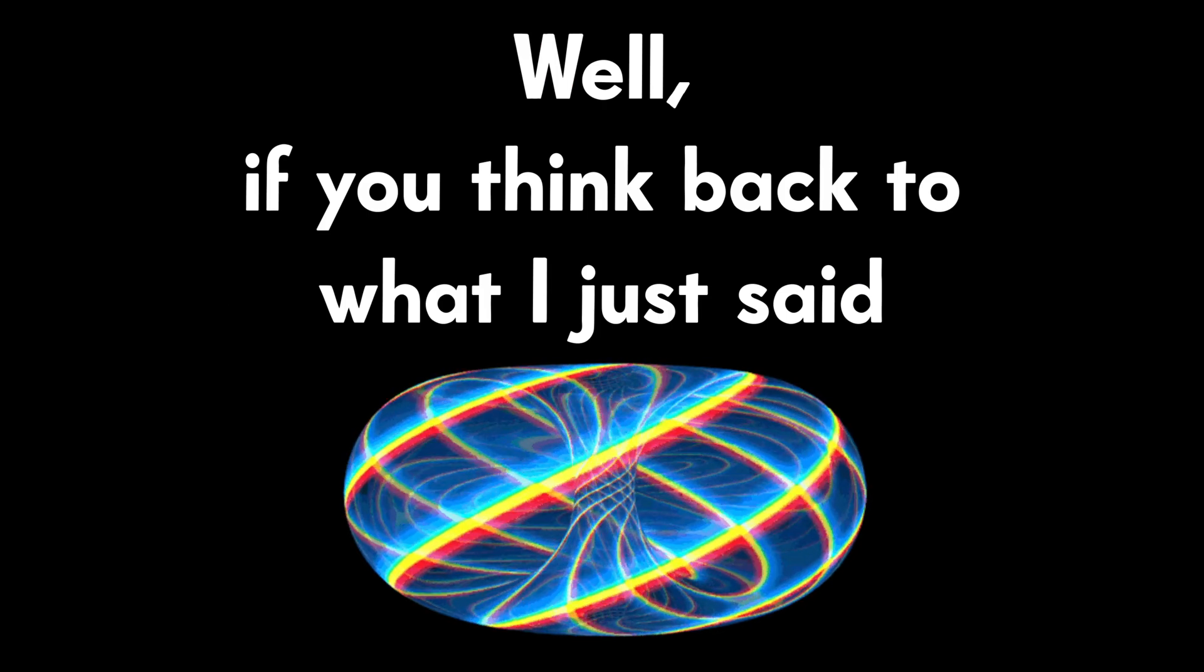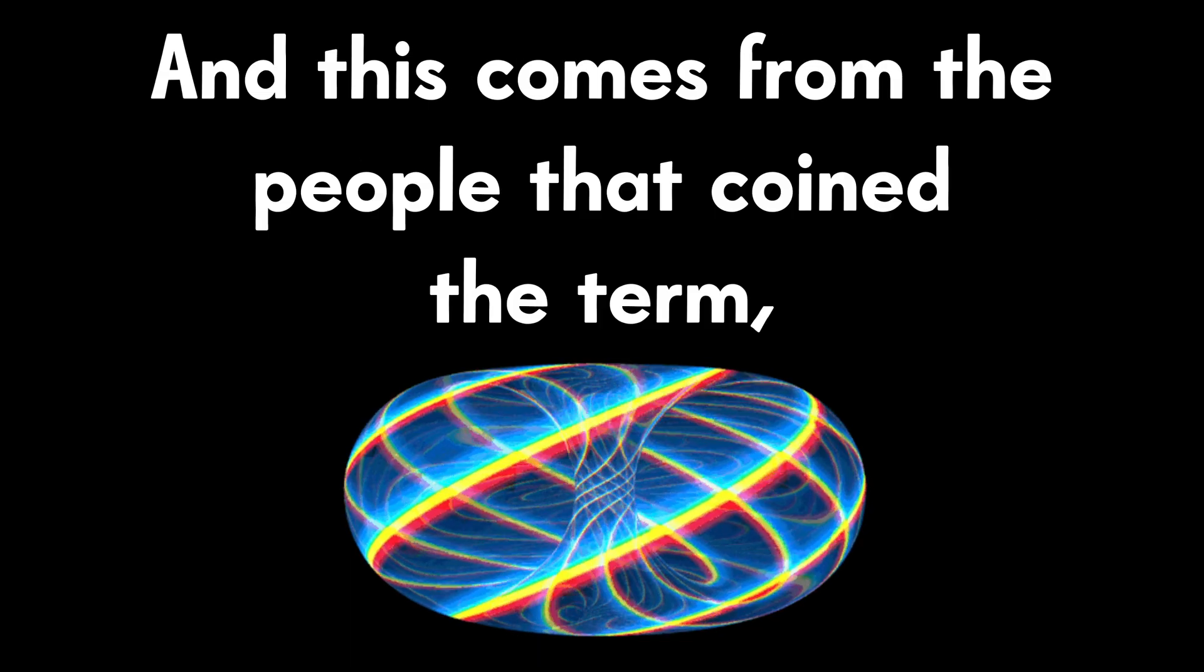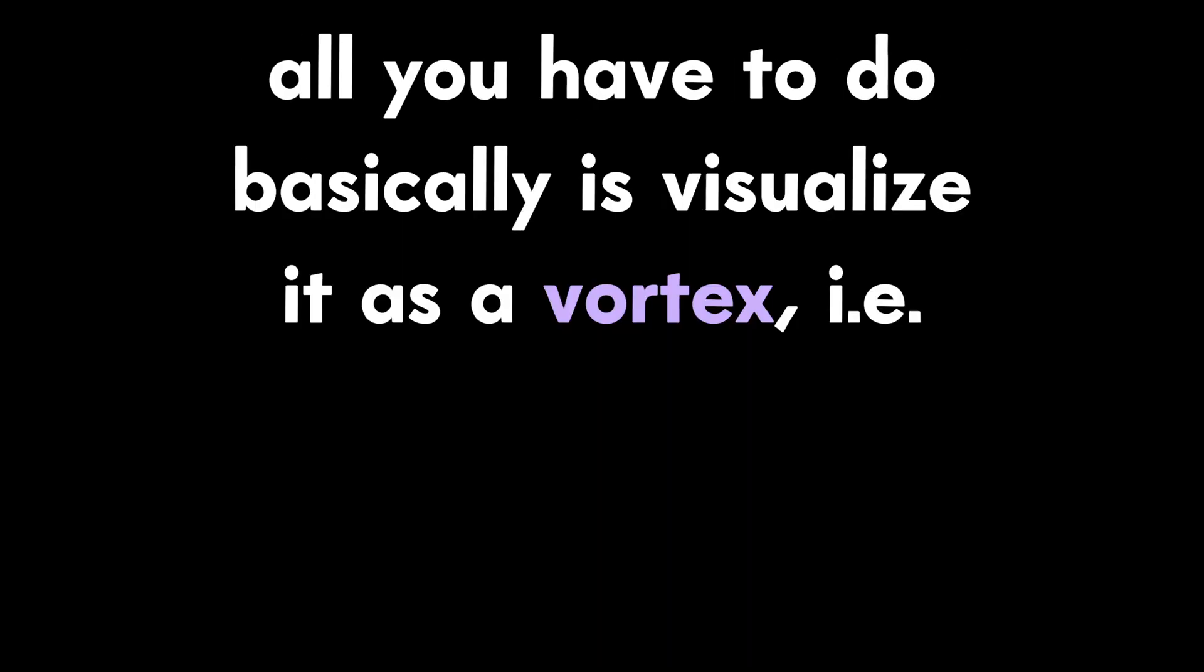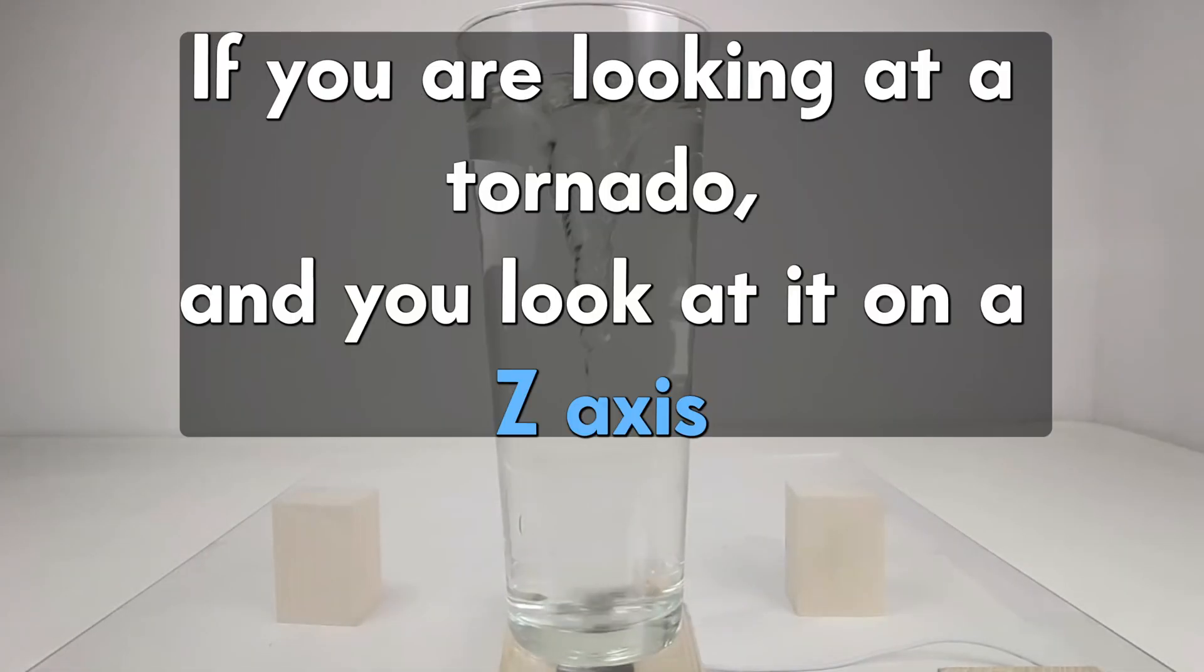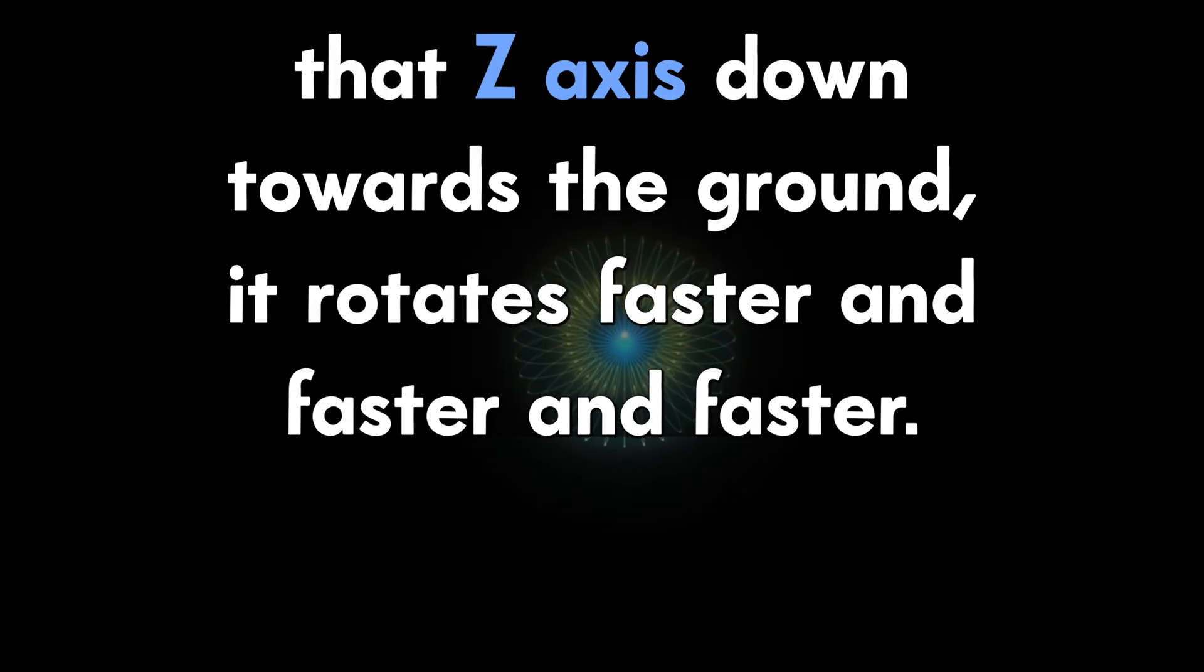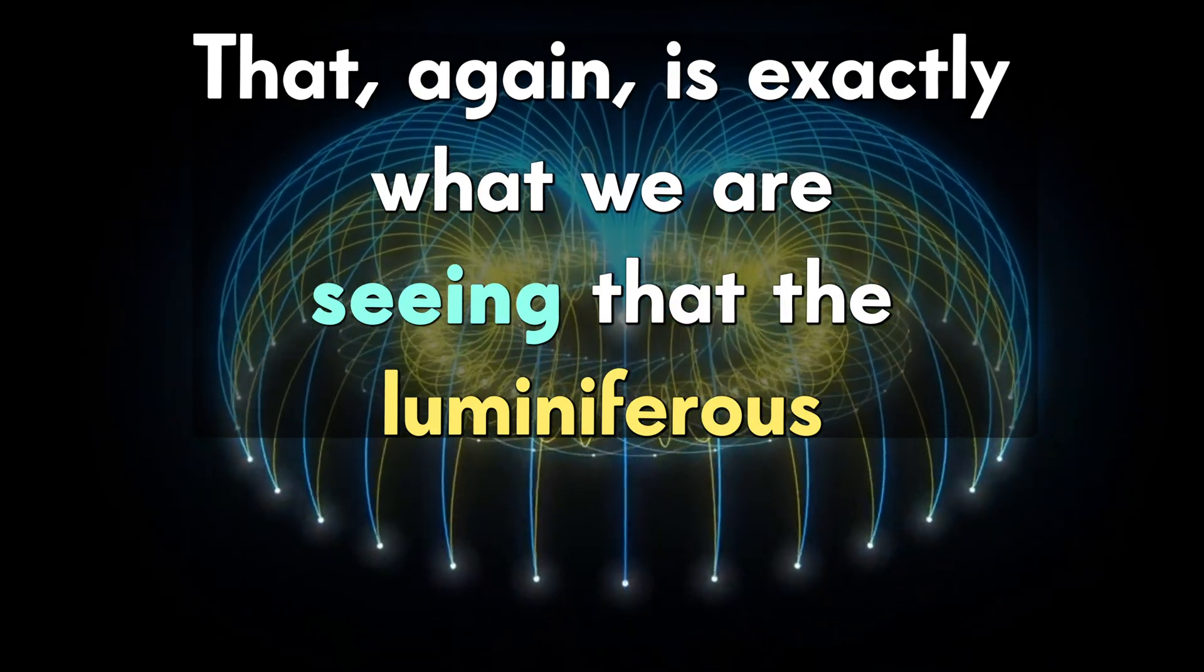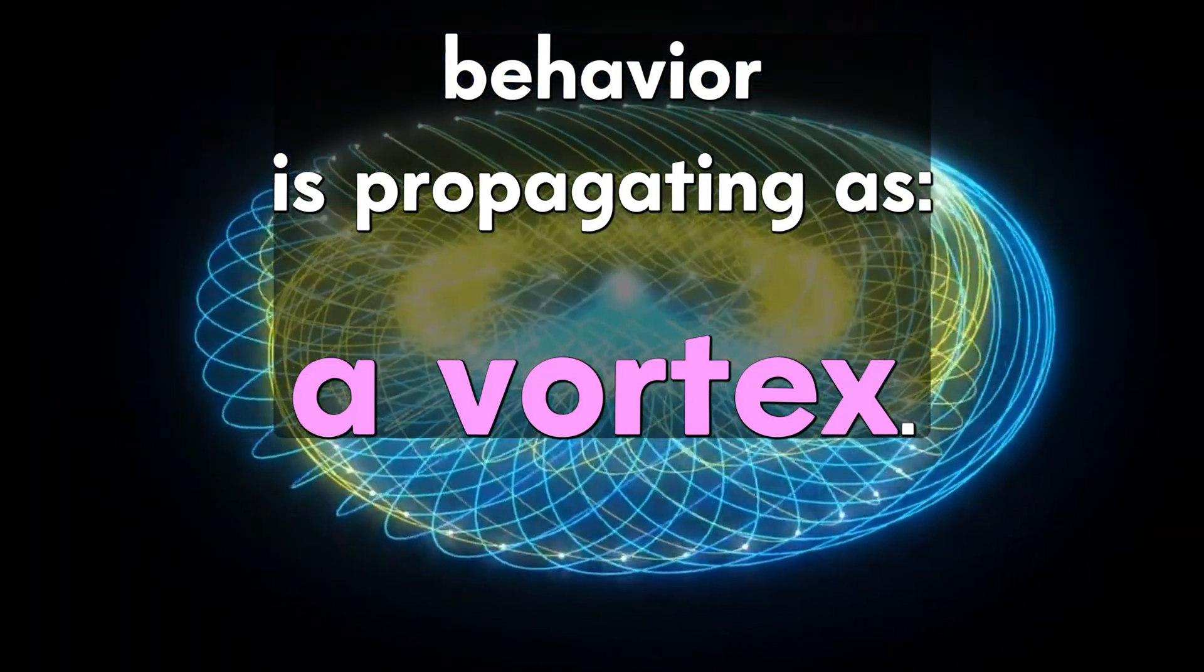Well, why would that be? If you think back to what I just said about how the luminiferous ether was always said to propagate, and this comes from the people that coined the term, Newton, Maxwell, all these people that talked about this originally. All you have to do basically is visualize it as a vortex, like a tornado. If you are looking at a tornado and you look at it on a Z axis at the top of the tornado, it's rotating fairly slowly. And as you go down that Z axis down towards the ground, it rotates faster and faster and faster. So you have a considerably faster rotation rate at the ground than you do from high up in the air. That is exactly what we are seeing that the luminiferous behavior is propagating as a vortex.